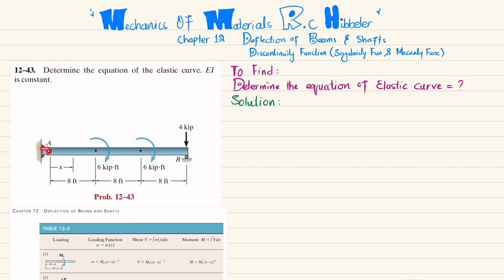You can see this beam: there is a pin support at point A and a roller support at point B. At one end we have a 4 kips load, and at this point we have a moment of 6 kips·ft, and there is also another moment of 6 kips·ft that is clockwise.